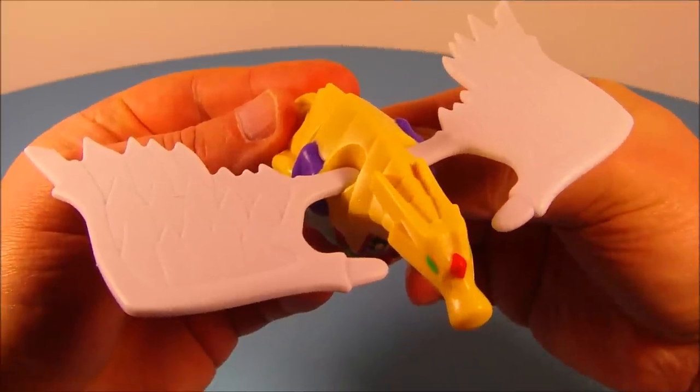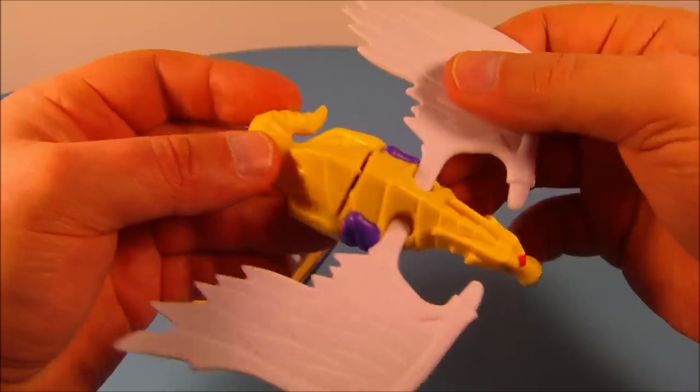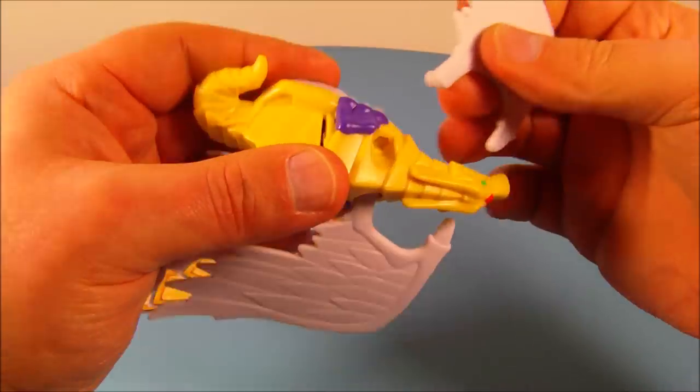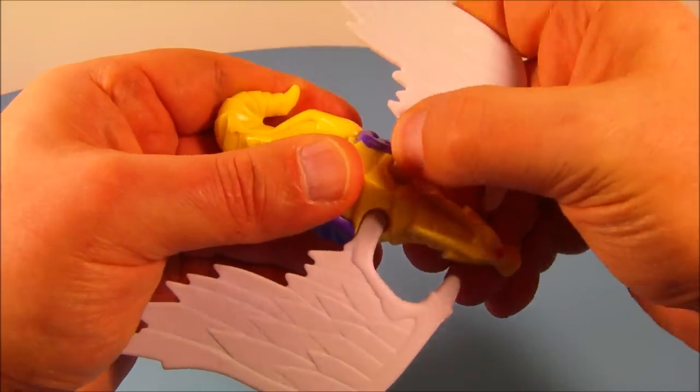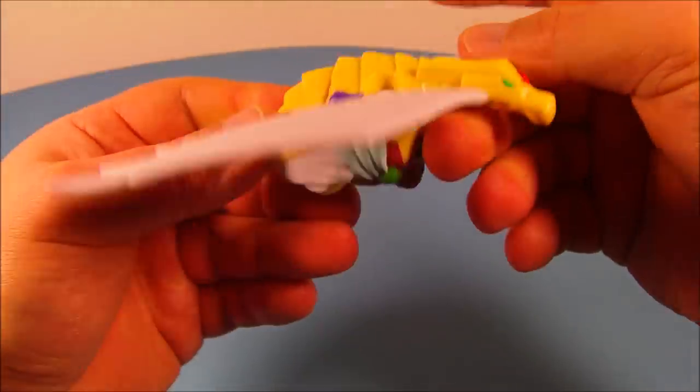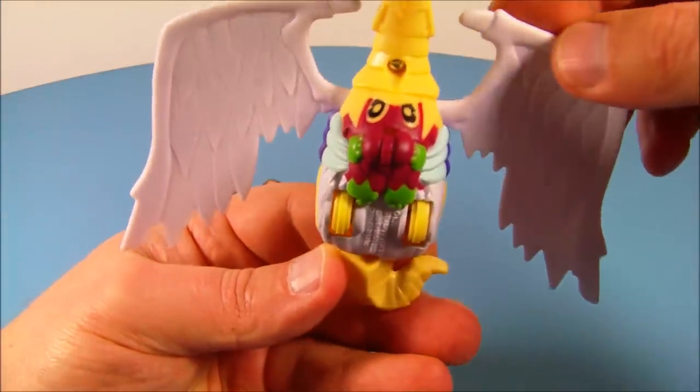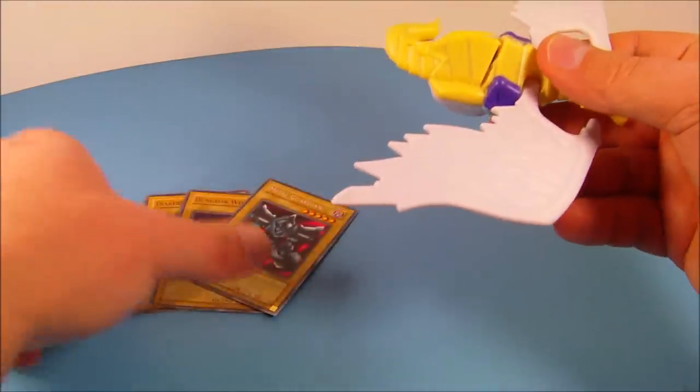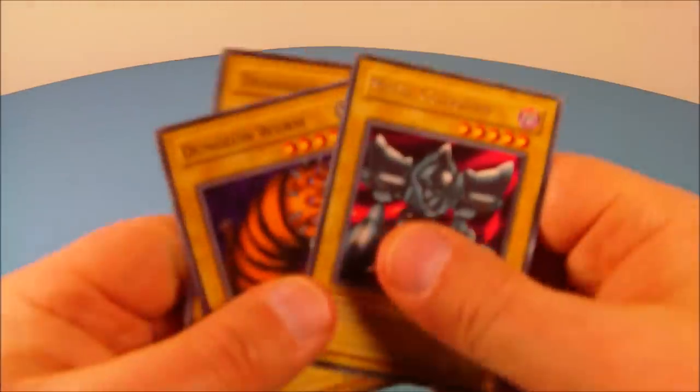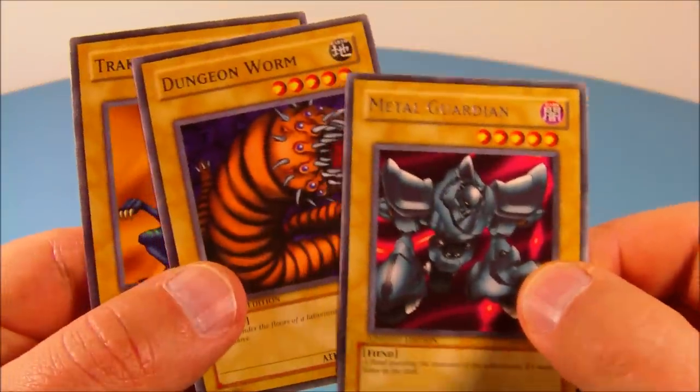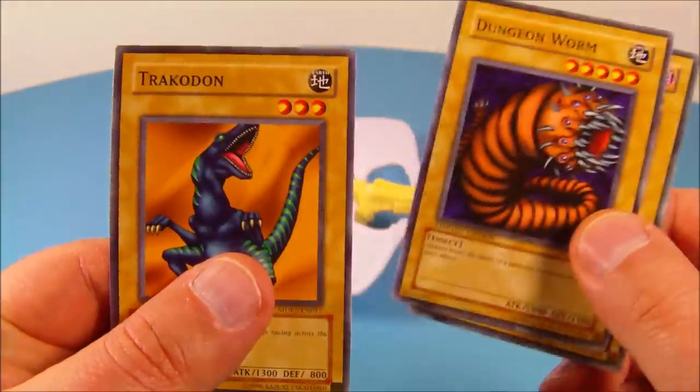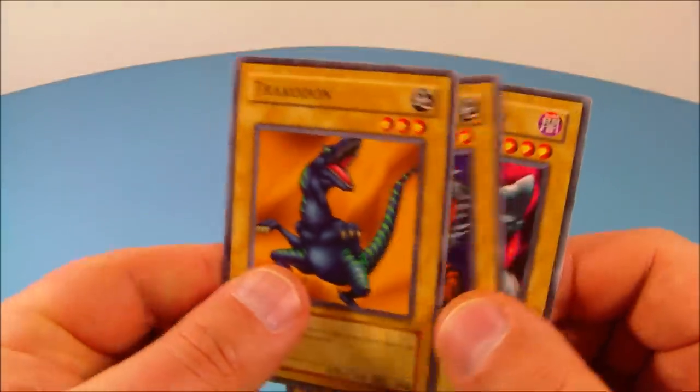And next up at number two is the Winged Curbo Level 10. Look at this guy. So it came with a couple of wings here. And all you have to do is attach them into these little holes. Just peg them right in. And then underneath here you have a couple of wheels which is actually a pullback feature. Man this guy looks really cool. So here are the three cards that come with it. Here's the rare. This is the Metal Guardian. Then we have the Dungeon Worm and the Trachodon which looks really neat.